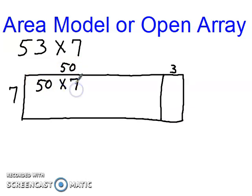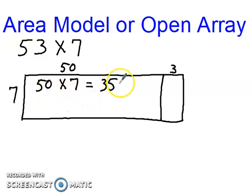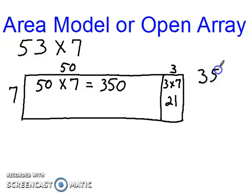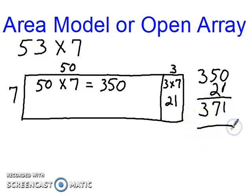Next I'll multiply 50 times 7: the 50 is across the top, 7 is on the side. 5 times 7 is 35, shifted one place value that's 350. Then the small box has 3 units across the top times 7 down the side, which equals 21. So I have 350 plus 21: that gives me an answer of 371.